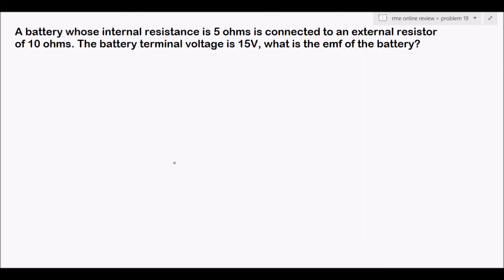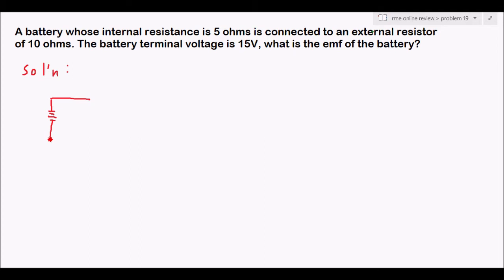A battery whose internal resistance is 5 ohms is connected to an external resistor of 10 ohms. The battery terminal voltage is 15 volts. What is the EMF of the battery — the electromotive force? That is what we need to find.